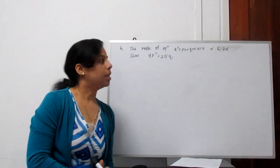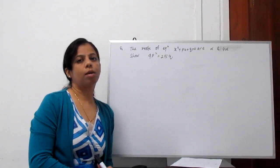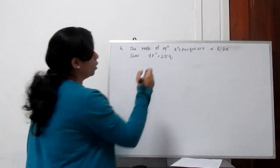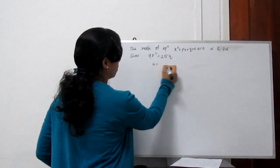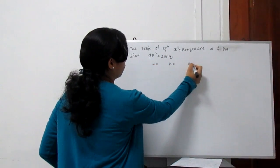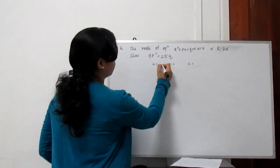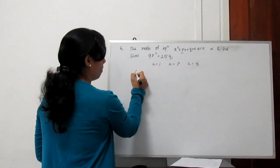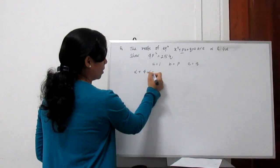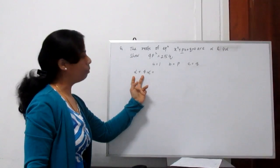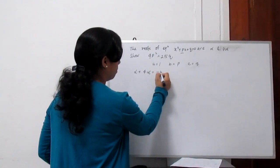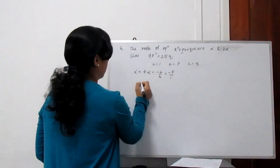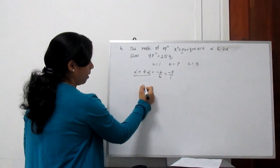Step 1: if your equation is not in the form ax² + bx + c, convert it. Step 2: compare with ax², bx, and c to find a, b, and c. Here a is 1, b is p, and c is q. So alpha plus beta — where beta is 4 alpha — gives alpha plus 4 alpha equals minus b by a, which is minus p by 1. So 5 alpha equals minus p.